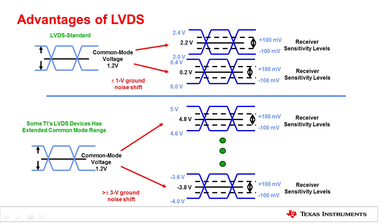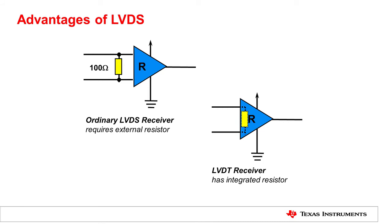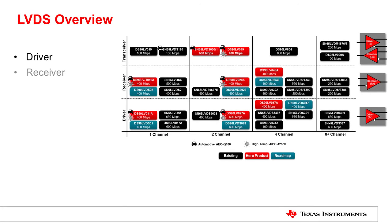TI also offers LVDT receivers, which has integrated resistors. This type of LVDS receiver have added the benefit of saving external resistors, resulting in saving board space, device count, and assembly effort. TI offers a wide range of LVDS driver and receivers that's suitable for different applications. For full portfolio, please go visit ti.com slash LVDS.